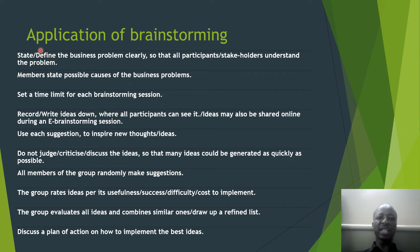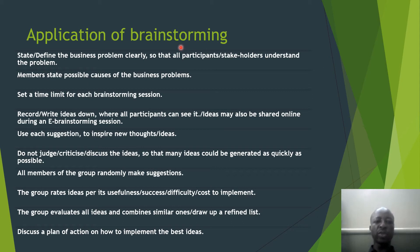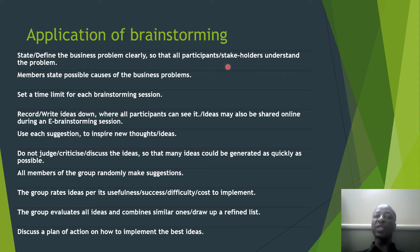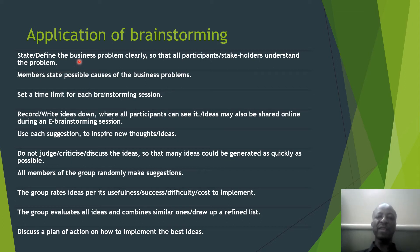The next problem solving technique is brainstorming. We are now focusing on the application of brainstorming — how to put brainstorming into practice. Step number one: state or define the business problem clearly so that all participants or stakeholders may understand the problem. As a manager, define or describe that problem so that everyone may understand it clearly.